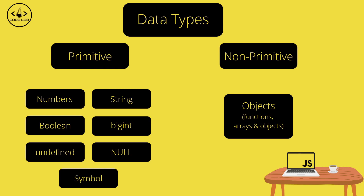We have quite a few different data types, and the best thing to do is categorize them. On the left we have seven primitive data types: number, string, boolean, BigInt, undefined, null, and symbol. For non-primitive data types there is only one — the object — which can include things like functions and arrays. Don't be confused by any of this JavaScript jargon; we'll go over each of these in this video.